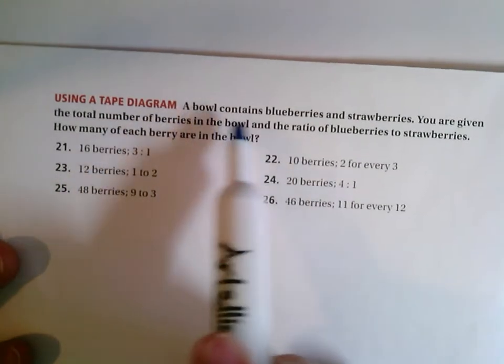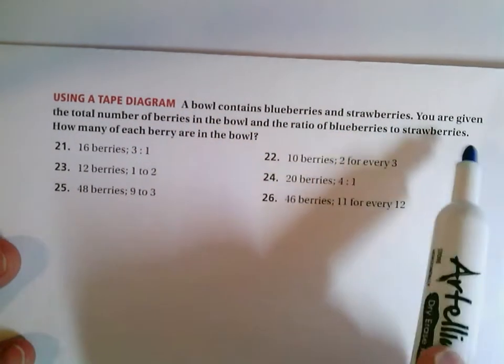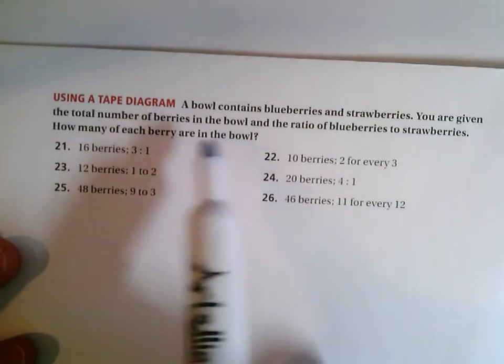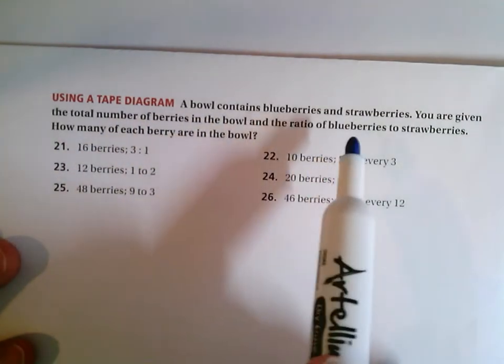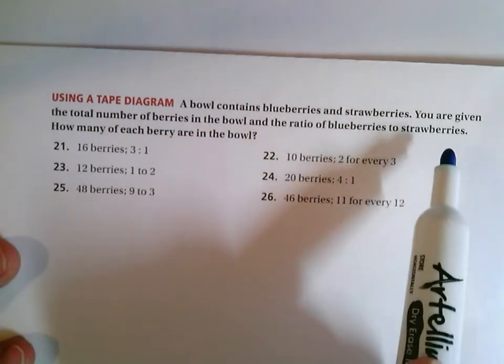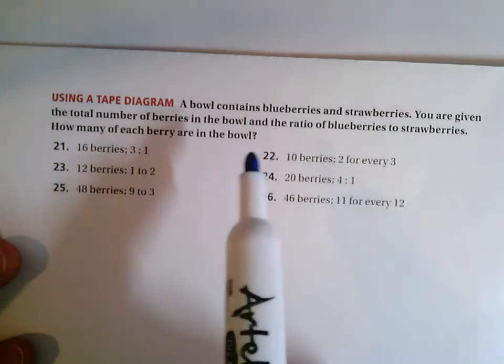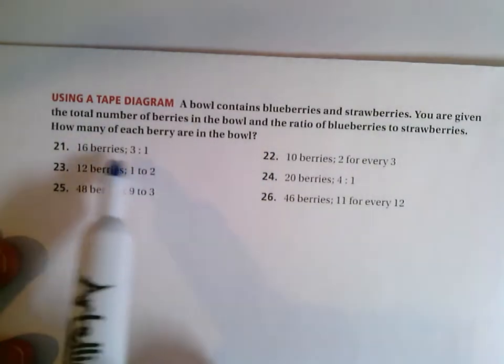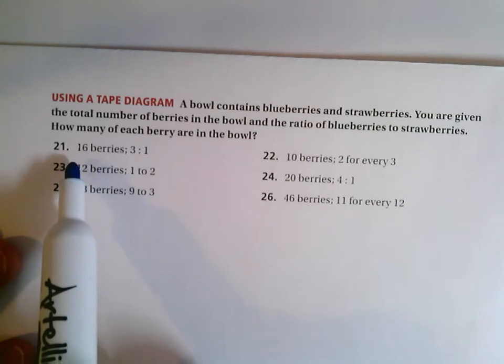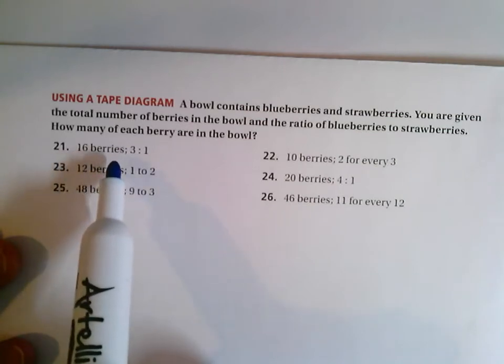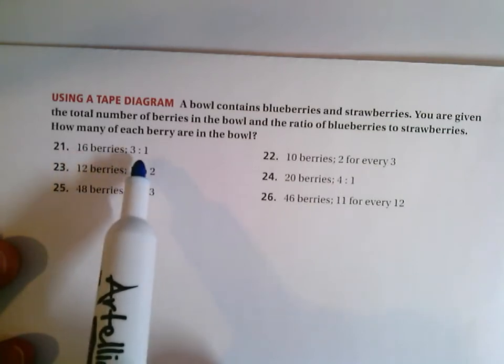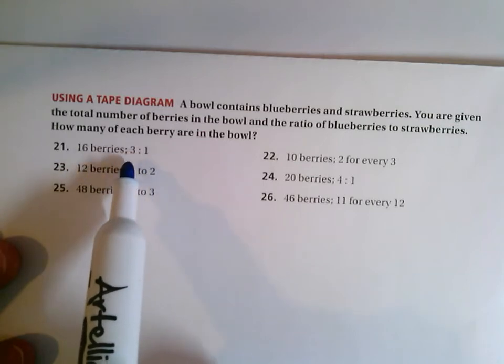So a bowl contains blueberries and strawberries. You're given the total number of berries in the bowl and the ratio of blueberries to strawberries. How many of each berry are in the bowl? So we're going to start off with this very first situation of 16 berries in my bowl and there's a three to one ratio of blueberries to strawberries.